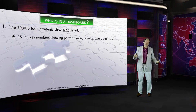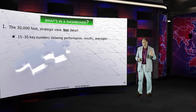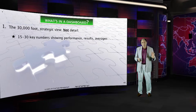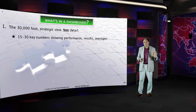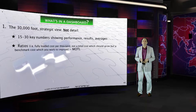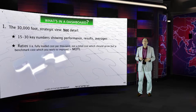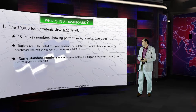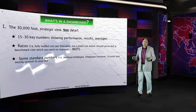That's what I mean when I say you have to have balance of the four key kinds of numbers. Most companies only do two, and that's why their dashboard implementations fail. We'll talk about that more in a bit. Ratios are very key, and some standard numbers should also be in there.